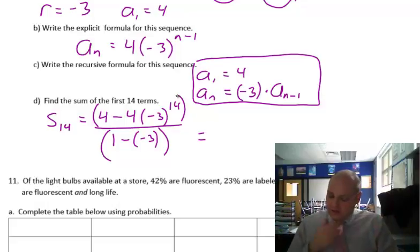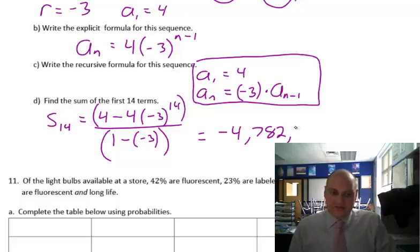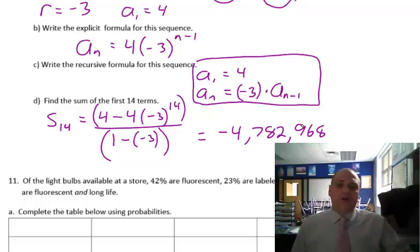Find the sum of the first 14 terms. We've got to use our sum formula. S14 — go to your reference sheet. It's A1 minus A1 times R to the N, where N is 14, over 1 minus R. Put that in your calculator — make sure you put the numerator and denominator in parentheses. Always implied parentheses on top and bottom. And that comes out to be negative 478,296. Make sure you're actually doing this and not just copying.